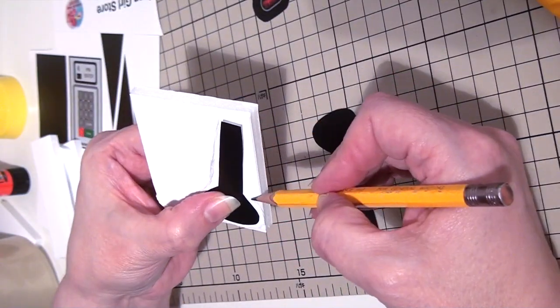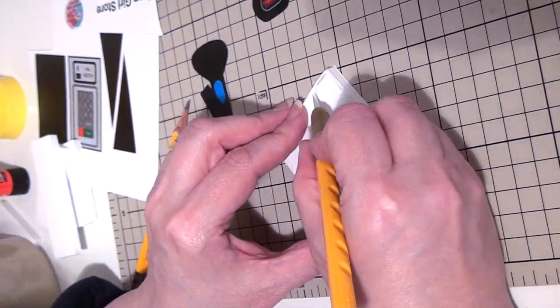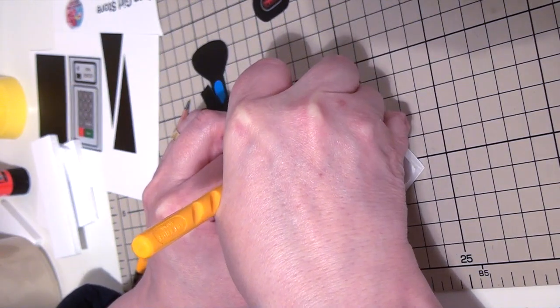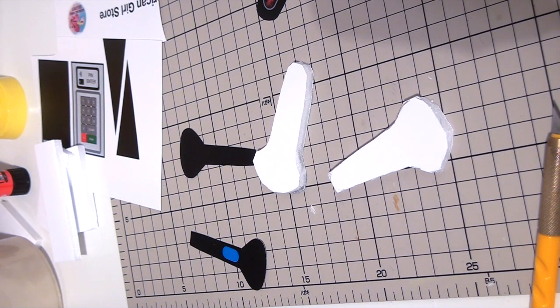Next trace the scanner shape on the foam board. You have two options. If you want a round shaped scanner, trace it bigger on the foam board. If you don't want to sand it, you can trace the original size and shape on the foam board.